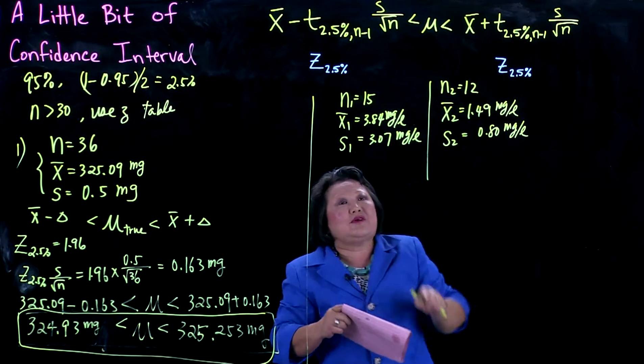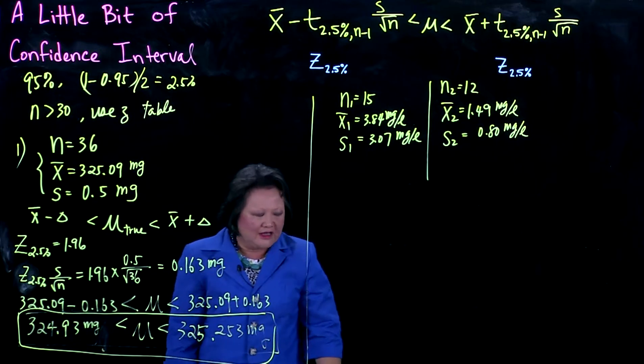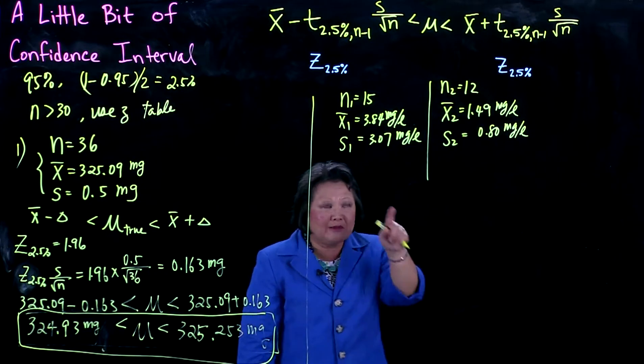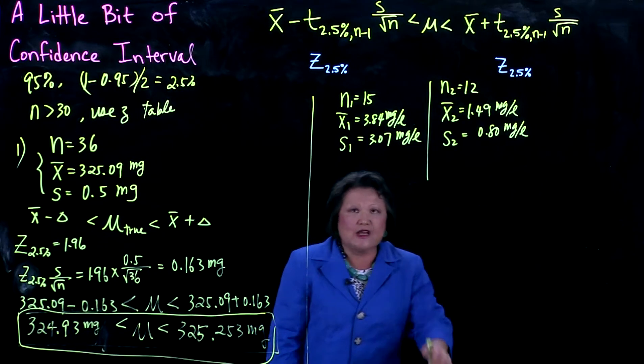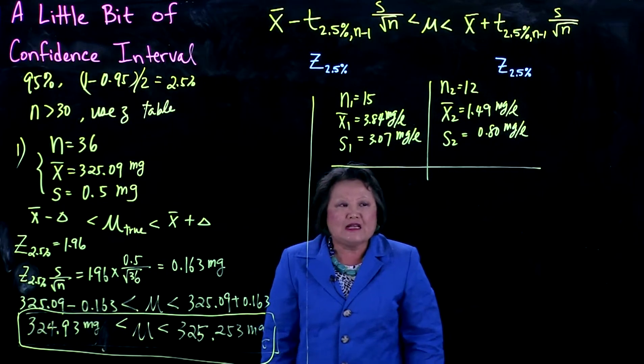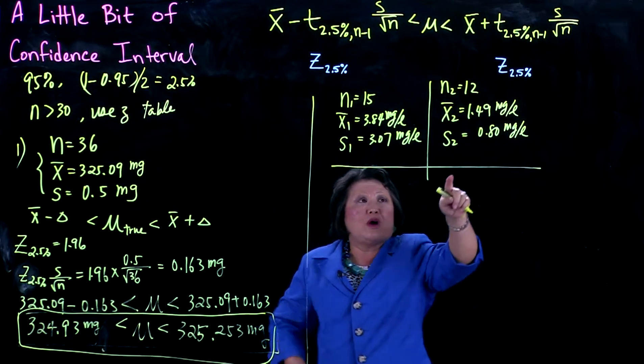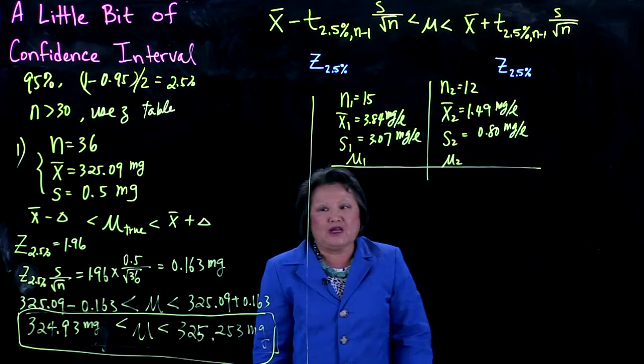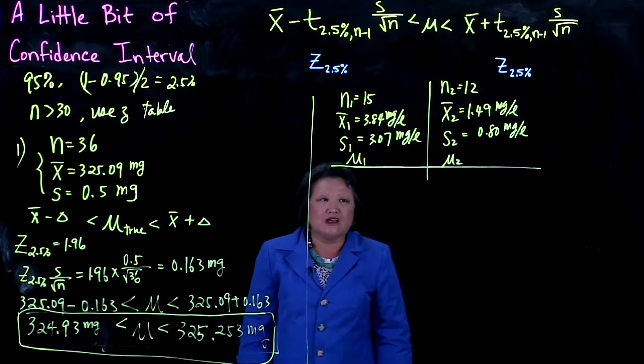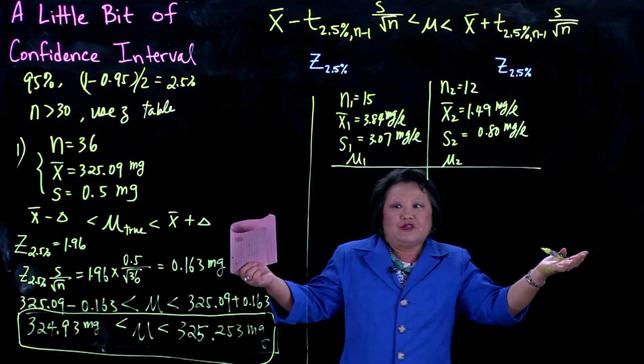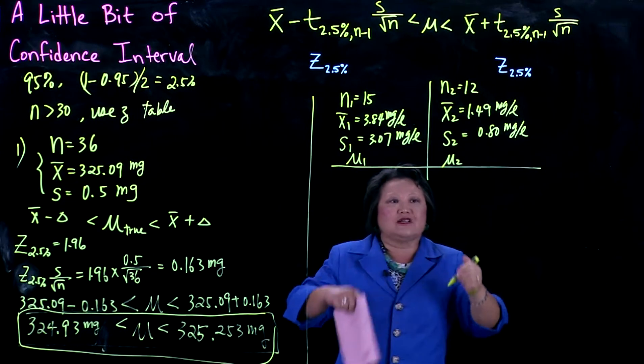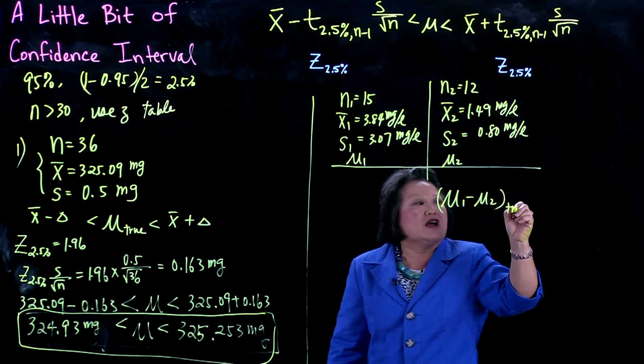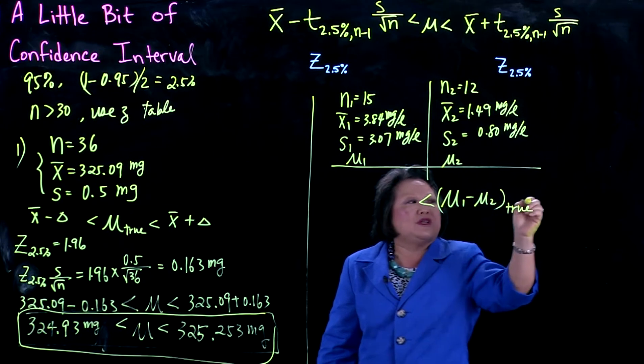You see how my x-bar reduced from 3.84, so you say, 'See, EPA, grant me my license. I cleaned the river.' But they say, 'No, you can't submit this. This is not legitimate. You've got to do a confidence interval.' What we want to know is mu2 minus mu1—the true population reduction. You must construct a confidence interval for the true population before and after.